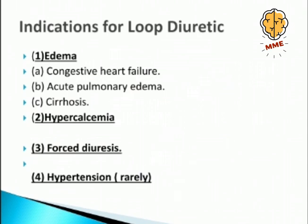Indications for loop diuretics: First is edema — due to congestive heart failure, acute pulmonary edema, or cirrhosis. Loop diuretic is the drug of choice for edema in all these conditions. Second is hypercalcemia — since loop diuretics increase calcium excretion, they can treat hypercalcemia. Third is forced diuresis. Fourth is hypertension, though loop diuretics are very rarely used for hypertension as we have better antihypertensive drugs.